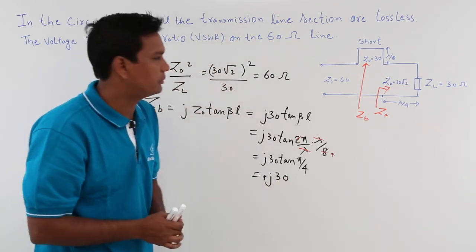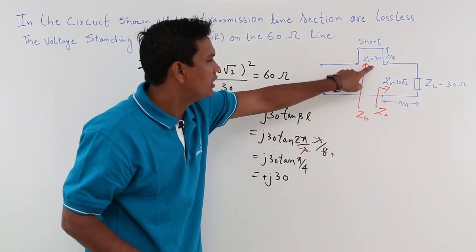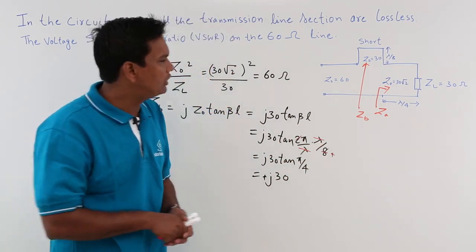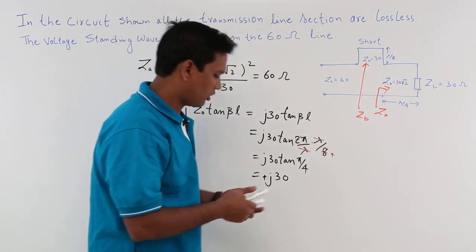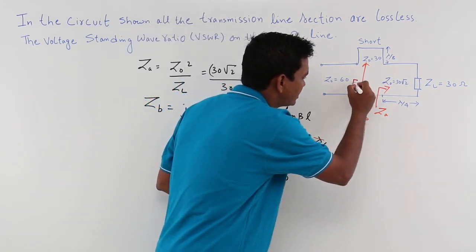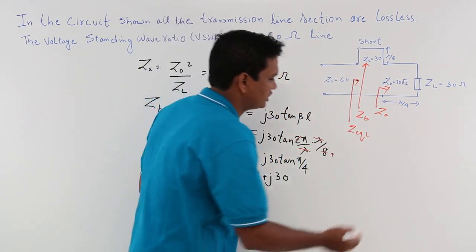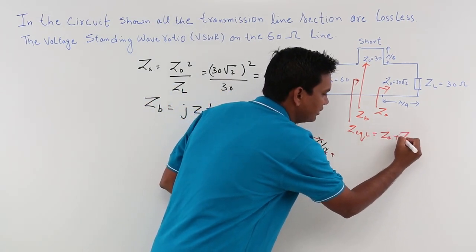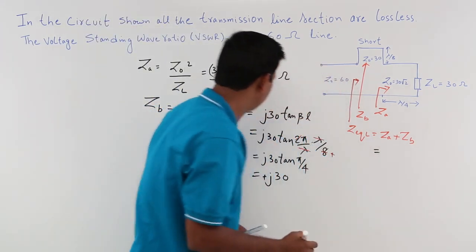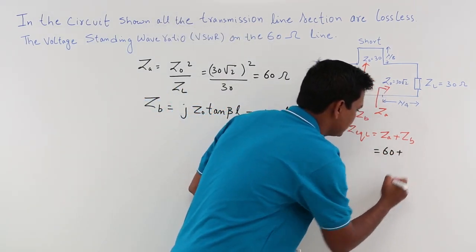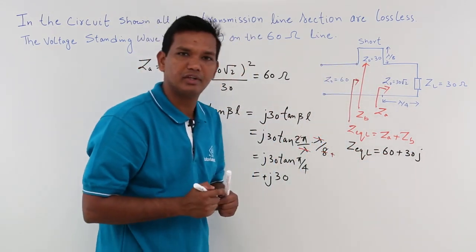I have now obtained ZA equal to 60 ohms and ZB equal to j30. Looking at how ZA and ZB are connected: if any current is flowing through one, the same current flows through the other, which means ZA and ZB are in series. So the equivalent load impedance Z_equivalent_load equals ZA plus ZB, which comes out to be 60 plus j30 ohms.